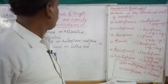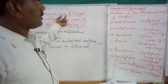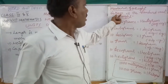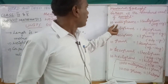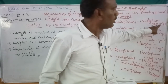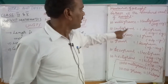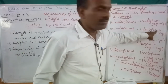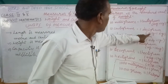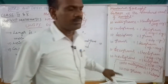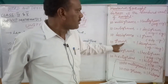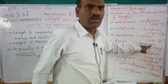Now for measures of weight: gram is the standard unit of weight — this is a most important point. 10 milligrams equal one centigram; mg means milligram, cg means centigram. 10 centigrams equal to one decigram, denoted dg.